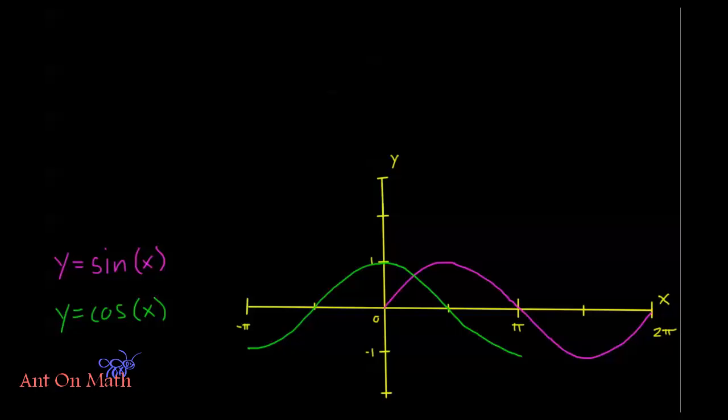Welcome back to AntonMath. In this second video of unit 3, we're going to be talking about some of the transformations of these graphs of sine and cosine. Now the first type of transformation I'd like to talk to you about is the vertical shift. I have some base graphs here. Let's go ahead and we're just going to use sine for this first one.